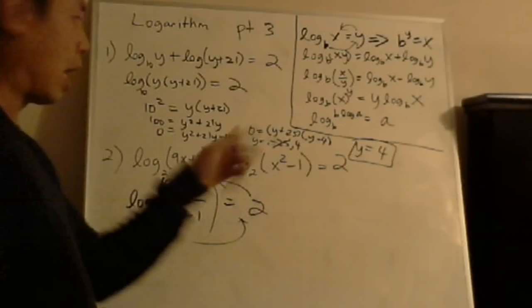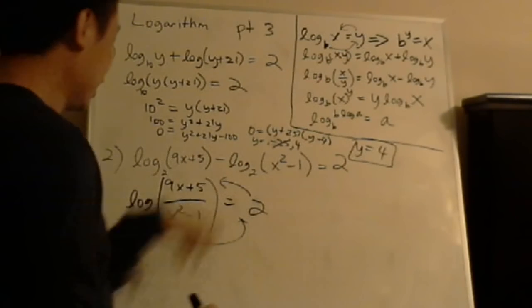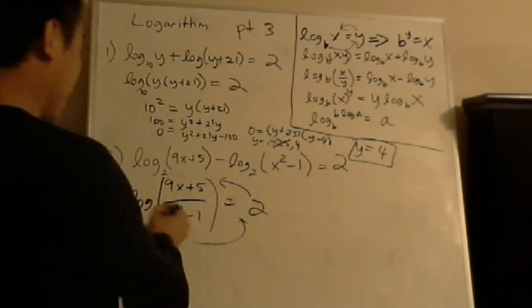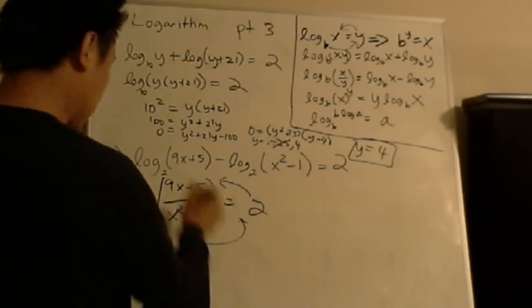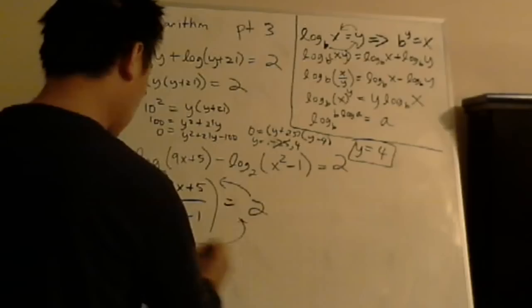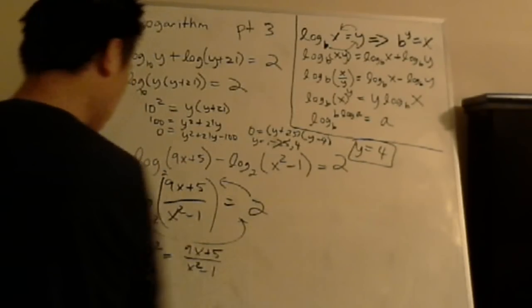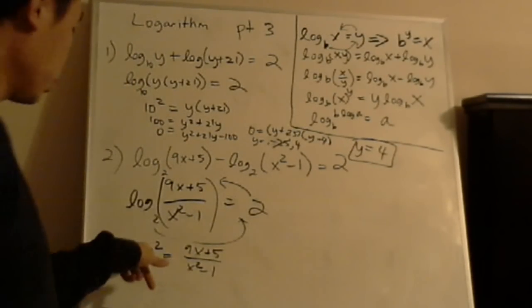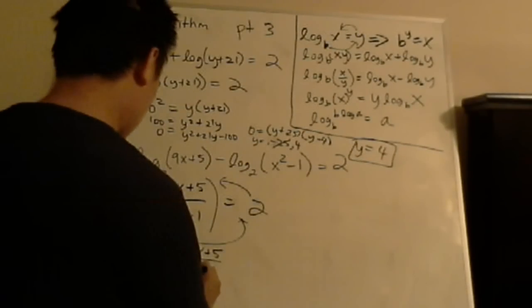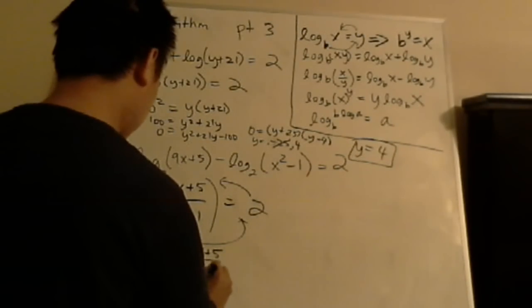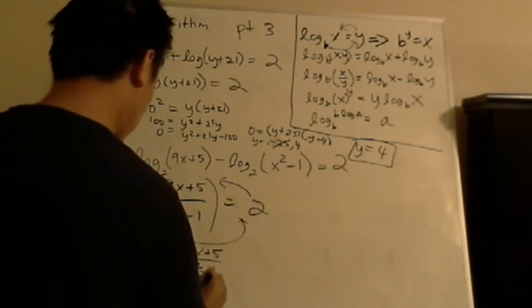It's kind of like almost like the circle of life kind of thing. But it's counterclockwise. So you get 2 squared equals to 9x plus 5 all over x squared minus 1. 2 squared is just 4. And that's 9x plus 5 over x squared minus 1.